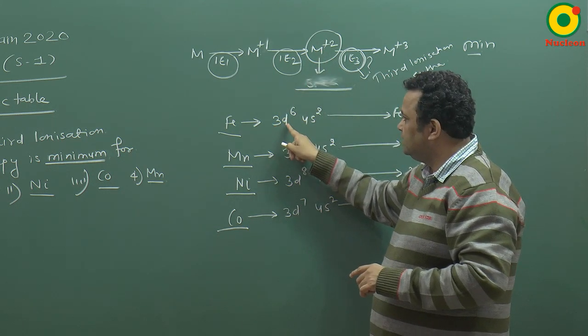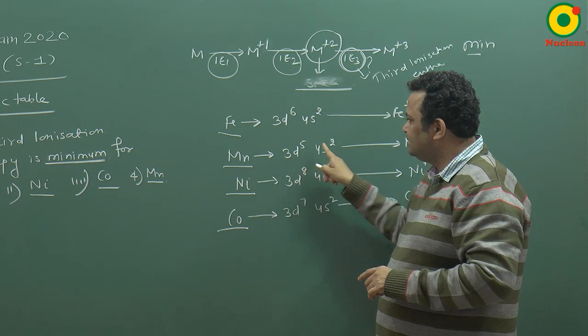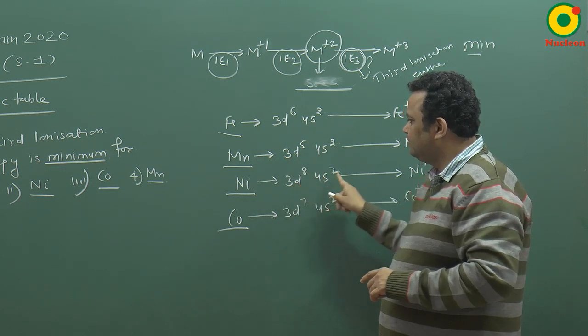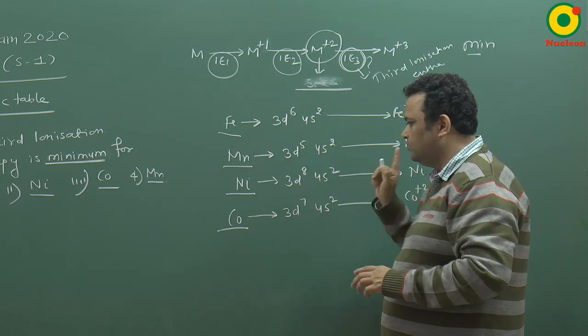we will see that two electrons are already removed. So iron's configuration is 3d6, 4s2, manganese 3d5, 4s2, nickel 3d8, 4s2, cobalt 3d7, 4s2.